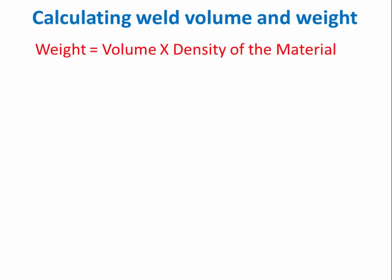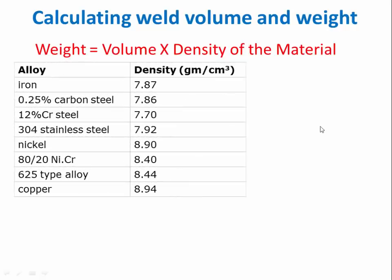So how to calculate the weight? Weight equals volume × density of the material. Which material we are using, is it carbon steel or stainless steel alloy? The density × volume, we will get the weight.